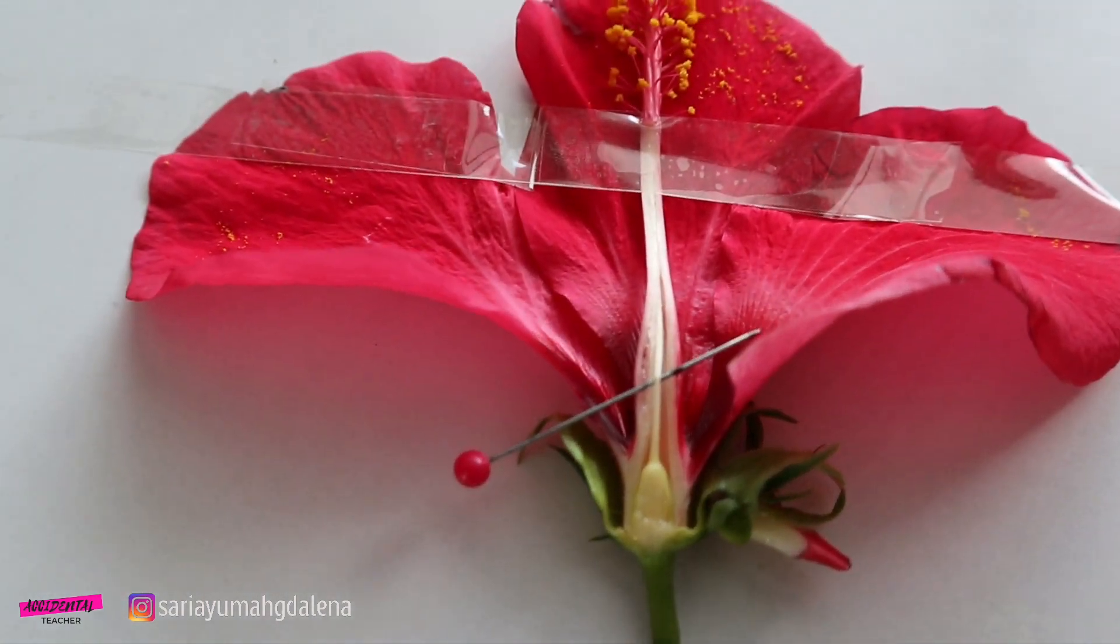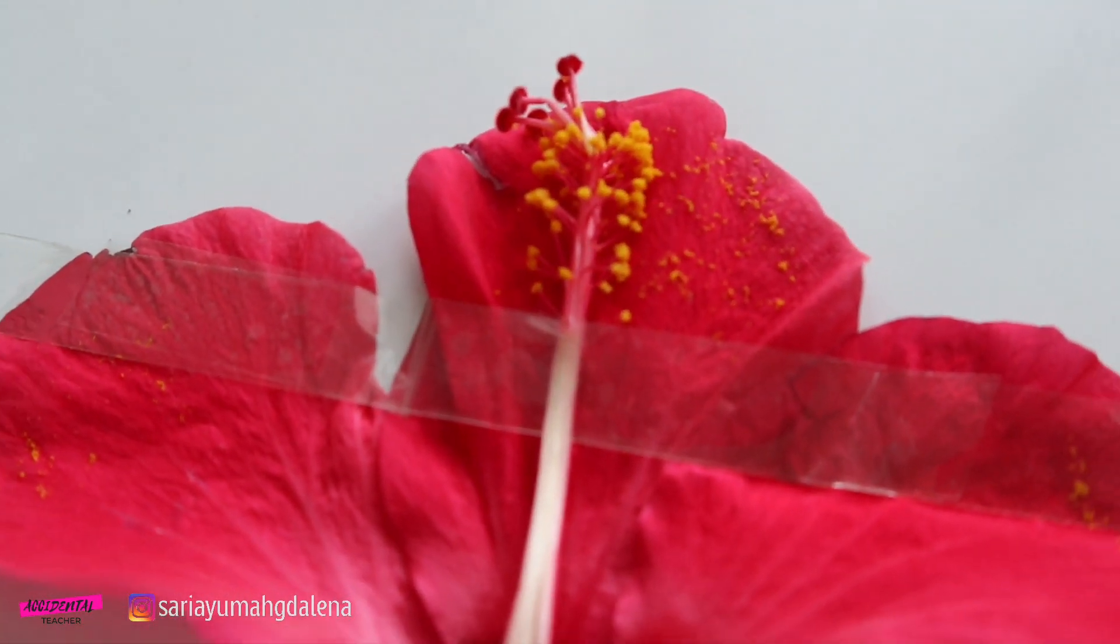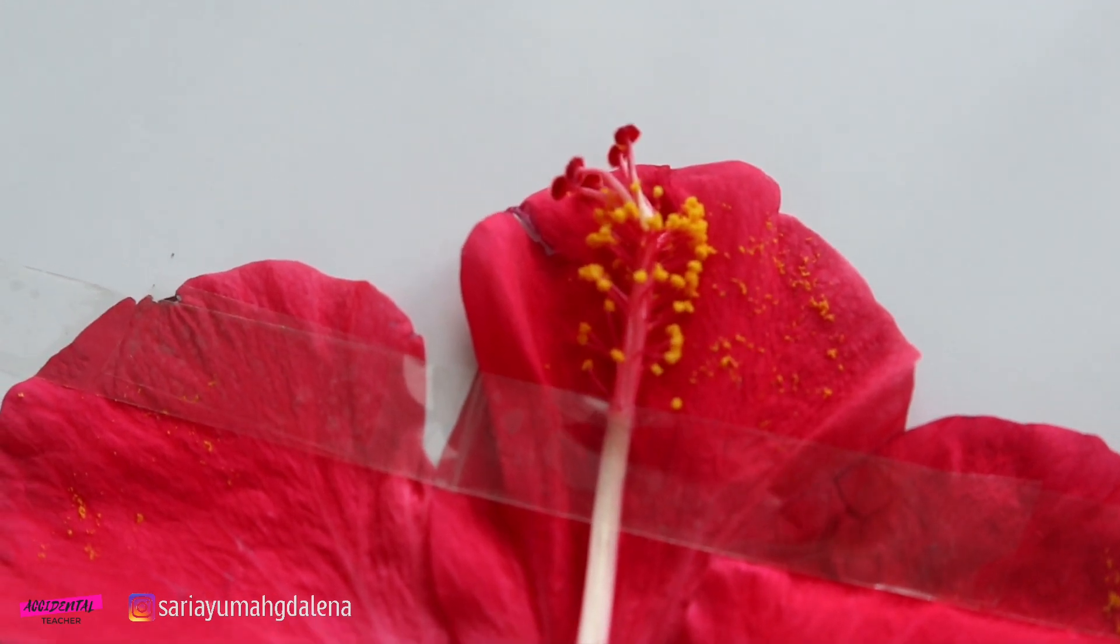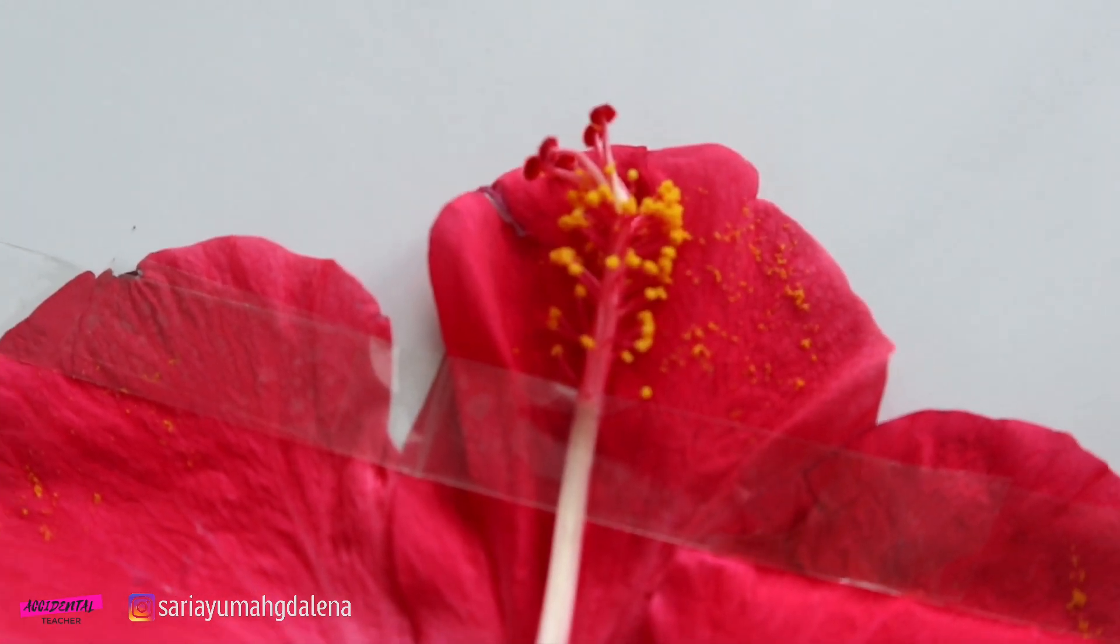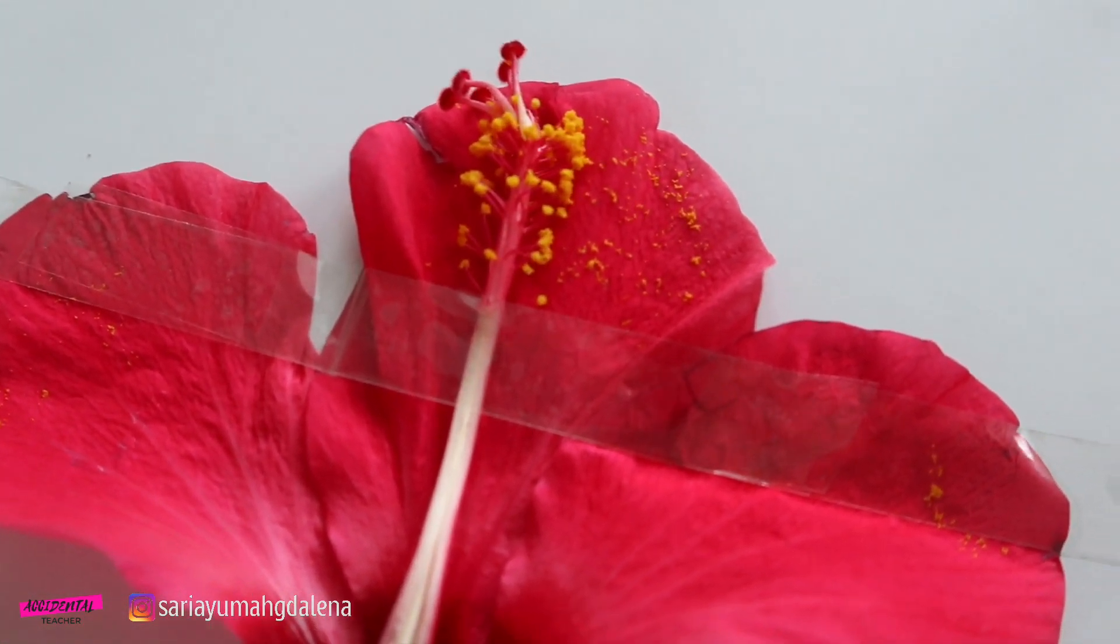So here we can see the horizontal section of hibiscus flower. You can speed up or slow down this video to see the details of the flower.